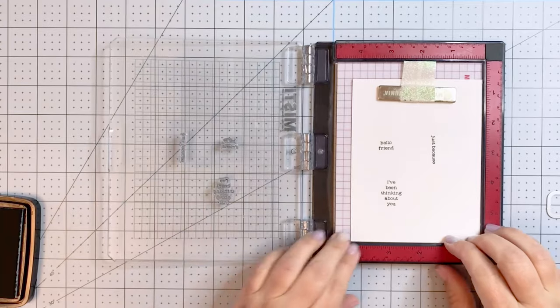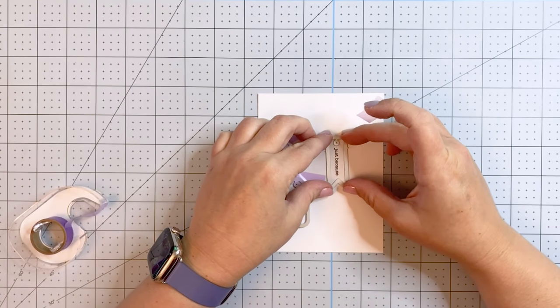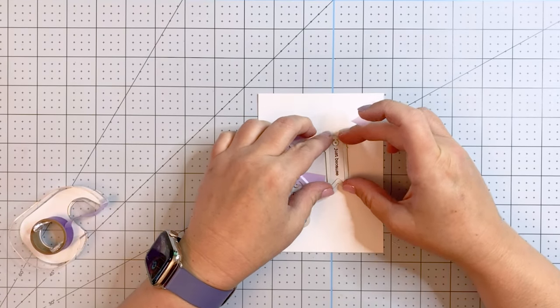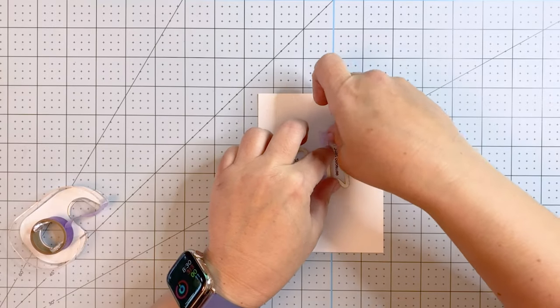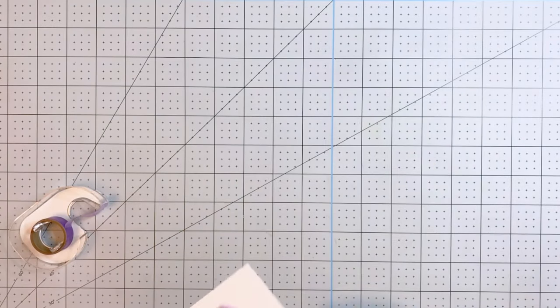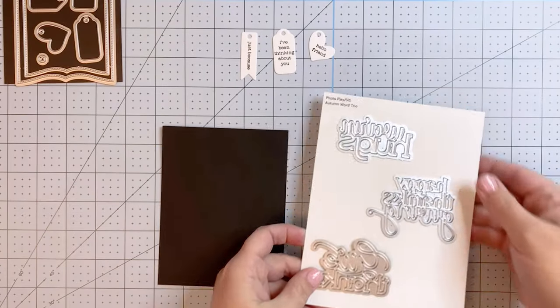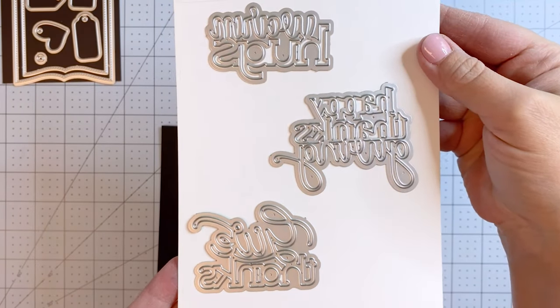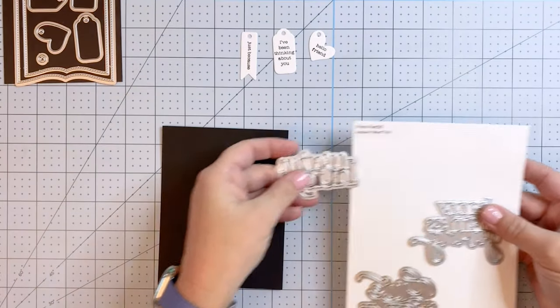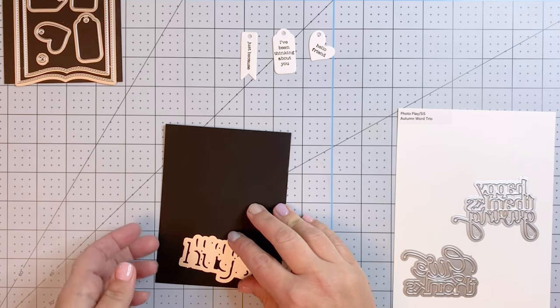So once I have those down, I can go back in and cut them all out using the charm dies that come with that set. These are going to look really cute on our card. They are going to go at the top and we're going to use a little bit of string you'll see in a minute.